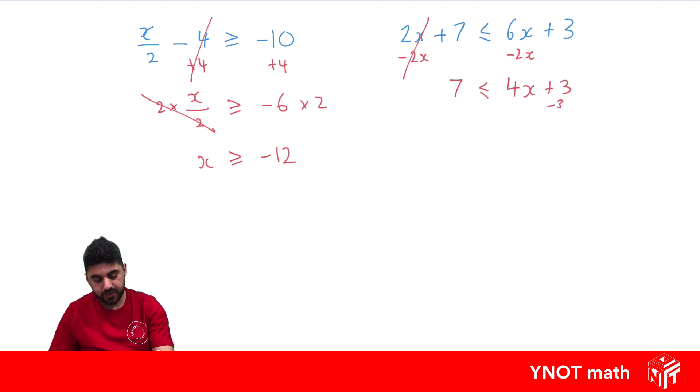That's minus 3 from both sides now. So it's going to be 0. 7 minus 3 is 4. So 4 is less than or equal to 4x. Now we can divide both sides by 4 to get x by itself. 4 divided by 4 is 1. 1 is less than or equal to x.